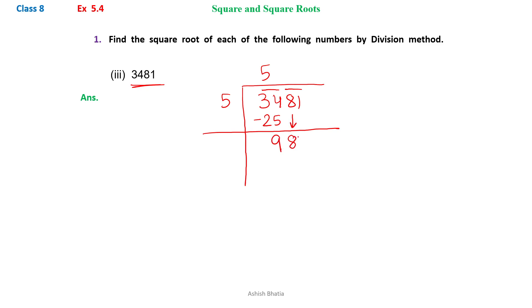And then we will copy down 81 as a pair. We will add the number we have written there, that is 5. 5 plus 5 is 10.